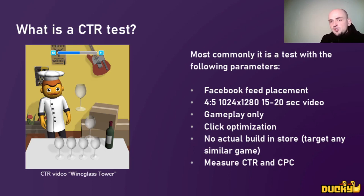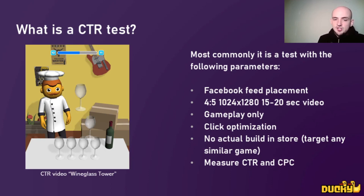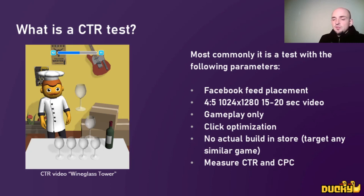CTR videos are really no different from ads with just a few exceptions. These are Facebook feed placement videos. They only use one video format: 4 to 5 aspect ratio, 15 to 20 second length. It features gameplay only, no modifications — nothing like 'you need to have a 100 IQ to pass this level,' nothing like that. It's just pure gameplay. It uses click optimization and works differently than we normally promote games. It has slightly different warnings, but it still correlates. You don't have to have an actual build in store — you can target any similar game and this will work. At the end we get CTR and CPC, which can show if your game has any potential.